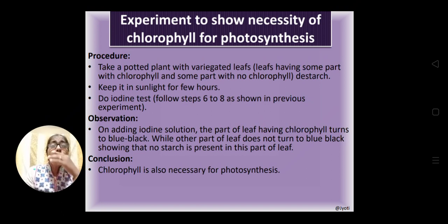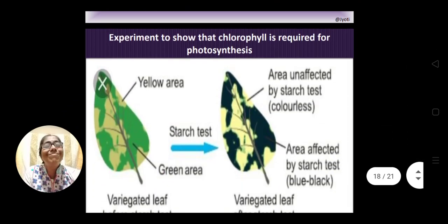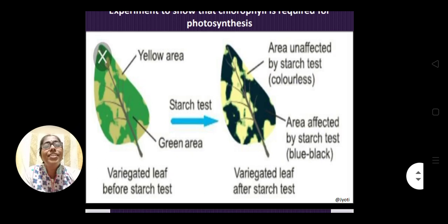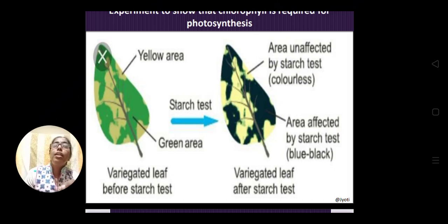Here in the diagram, on the left side there is a variegated leaf — some portion is green and some portion is colorless or another color due to absence of chlorophyll pigments, shown as the yellow area. When we keep this plant under sunlight, photosynthesis will take place. We need to know in which part — the green part or the yellow part — to determine whether chlorophyll is required.